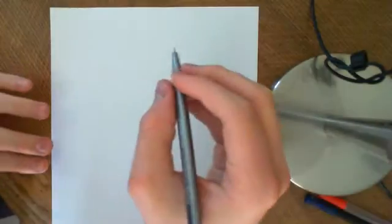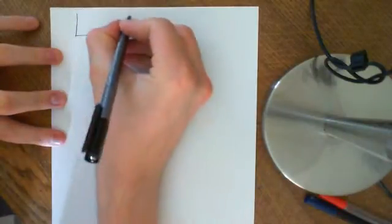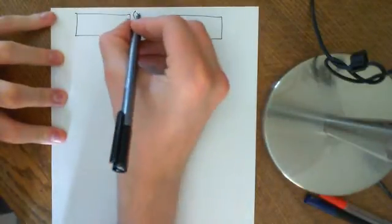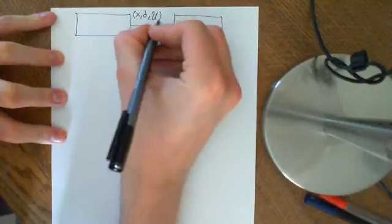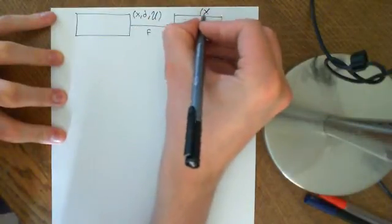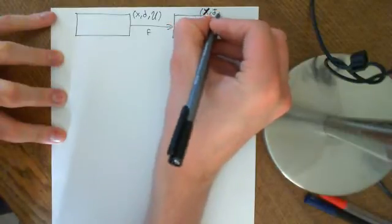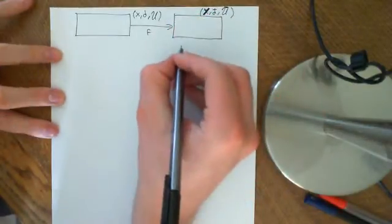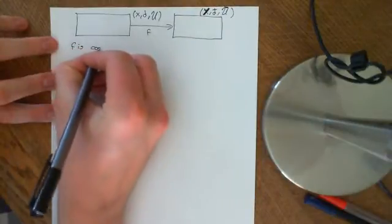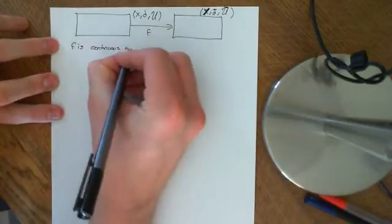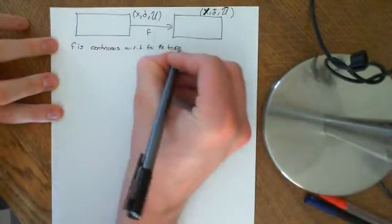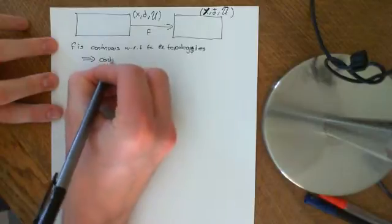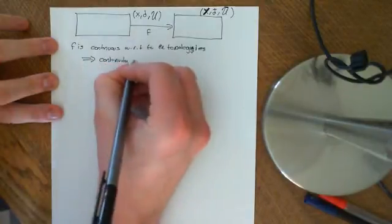In this video, we are going to prove that if you have a function f between two metric spaces — let's say (X, d), which imbues a natural topology U, and another metric space (Y, d-bar) with the natural topology U-bar — then what we want to show is that if f is continuous with respect to the topologies, then it is continuous in the metrical sense as well. So topological continuity implies continuity in the metrical sense.